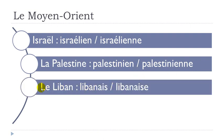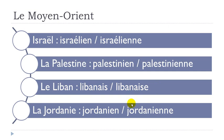Le Liban — Libanais. The masculine and feminine forms are both Libanais. And then for La Jordanie: Jordanien. Jordanienne.